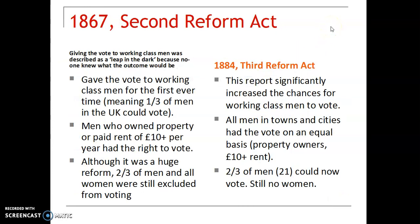In 1867, this secondary Reform Act gave working class men the vote for the first time, but they did have to have a little bit of property. A third Reform Act of 1884 increased working men's capacity to vote as well, but again there was still a focus on property ownership. This meant that two-thirds of men over 21 could vote.